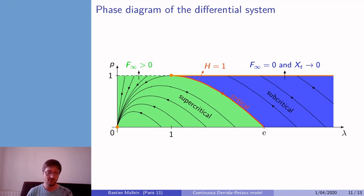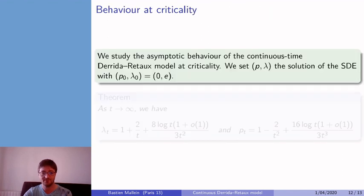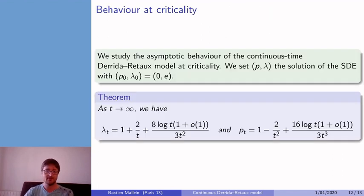And because we have a simple differential system, we can also know pretty exactly how those (pₜ, λₜ) behave as t goes to infinity. So as t goes to infinity, we have that λₜ behaves as 1 + 2/t plus little o of 1/t, and pₜ like 1 - 2/t² plus little o of 1/t².